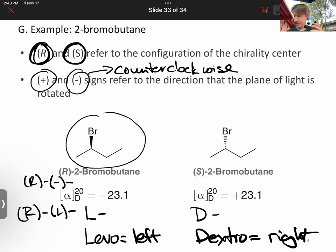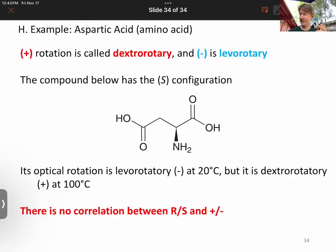And this one's a plus. So dextro goes with plus. And so, it is possible to be R and minus. It is possibly R and plus because they are unrelated. You have to do the experiments.